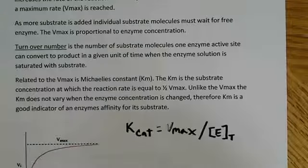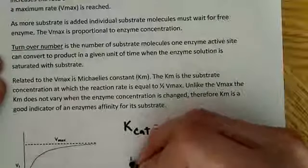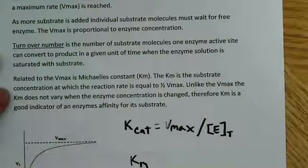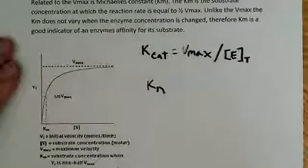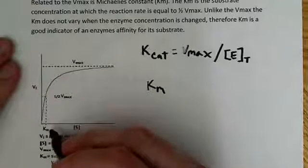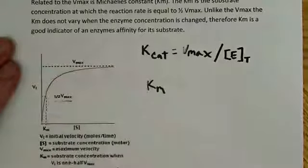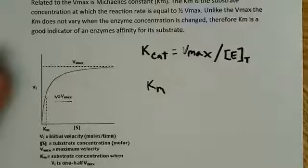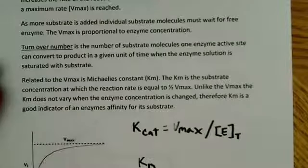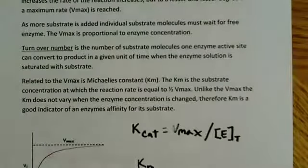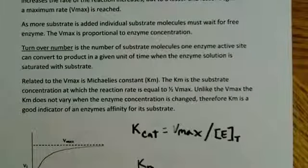Related to Vmax is also what's known as the Michaelis constant, Km. The Km is the substrate concentration at which the reaction rate is equal to one-half Vmax. If we look at the graph, the Km is listed right here — it's the Michaelis constant, equal to one-half Vmax. Unlike the Vmax, the Km does not vary when enzyme concentration is changed. Therefore, the Km is a good indicator of an enzyme's affinity for substrate.